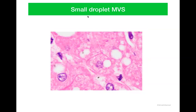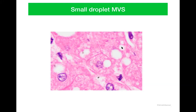The next variation is small droplet macrovesicular steatosis. In the small droplet, the fat vacuole is still present in the cytoplasm, but the size of the droplet is less than half of the cytoplasm. There is a droplet which is easily identifiable, and the nucleus here is central.